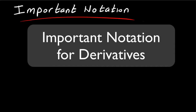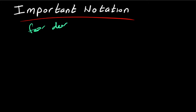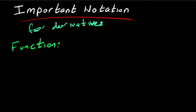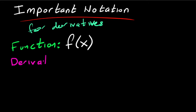I want to talk about some important notation for derivatives. We have different ways of writing derivatives. For example, if you have a function f of x, then the derivative is going to equal f prime of x.